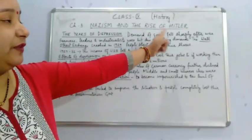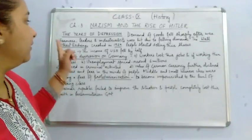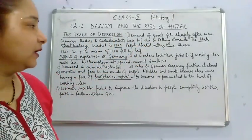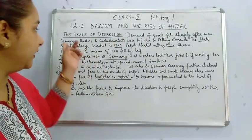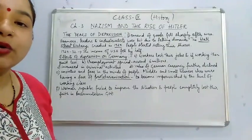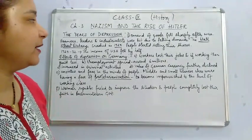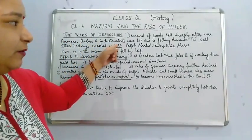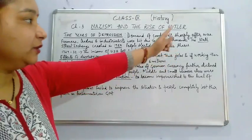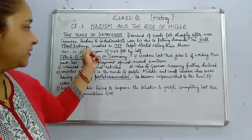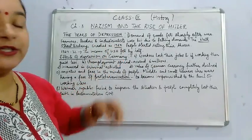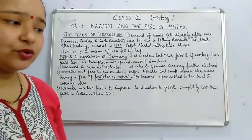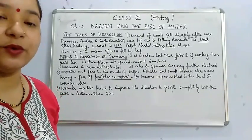Demands for goods fell sharply after the war. Farmers, traders, and industrialists were all hit due to falling demand. The Wall Street Exchange crashed in 1929. The Wall Street Exchange is the USA's main stock exchange headquarters, and when it crashed, industries saw their share values decline tremendously.